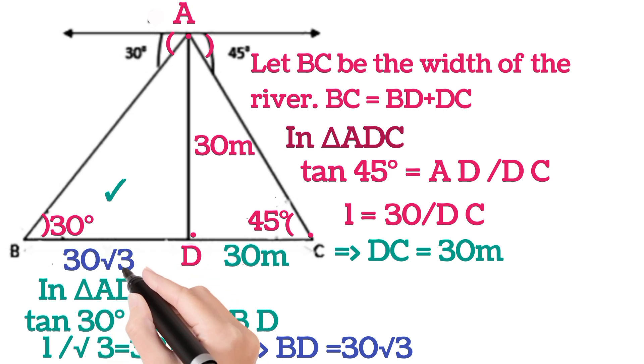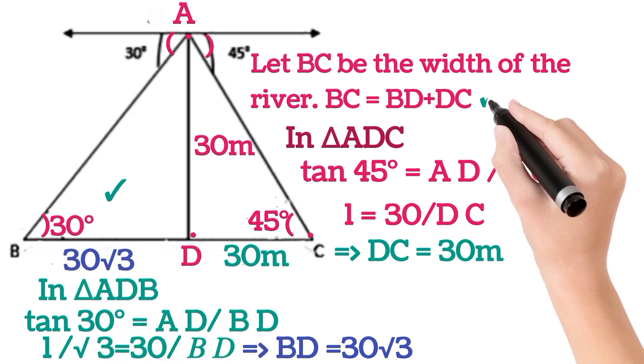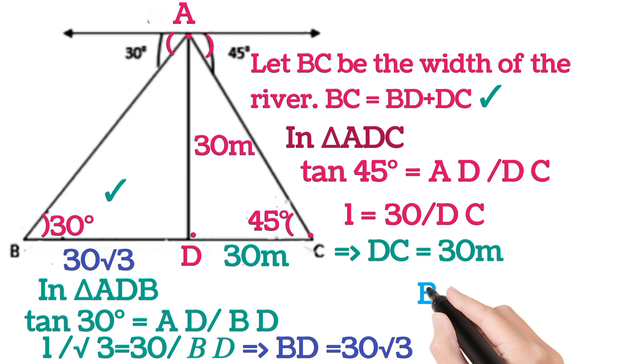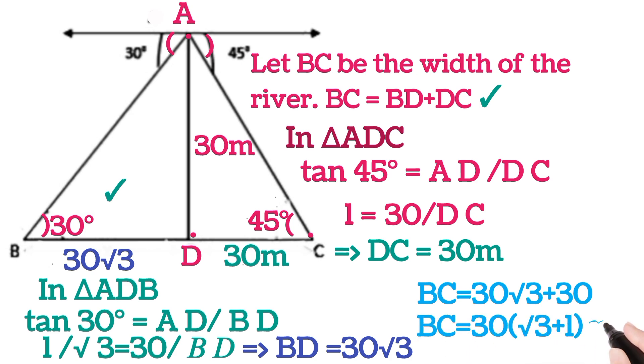Now on substituting the values here, we will get BC is equal to 30 root 3 plus 30, that is BC is equal to 30 times (root 3 plus 1) meters. So this is the width of the river. So this is the width of the river.